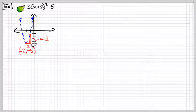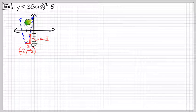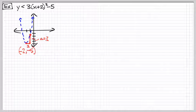Now, because we have a less than, we don't have a less than equal, I'm going to use a dashed line. And because it's less than, we shade everything below.